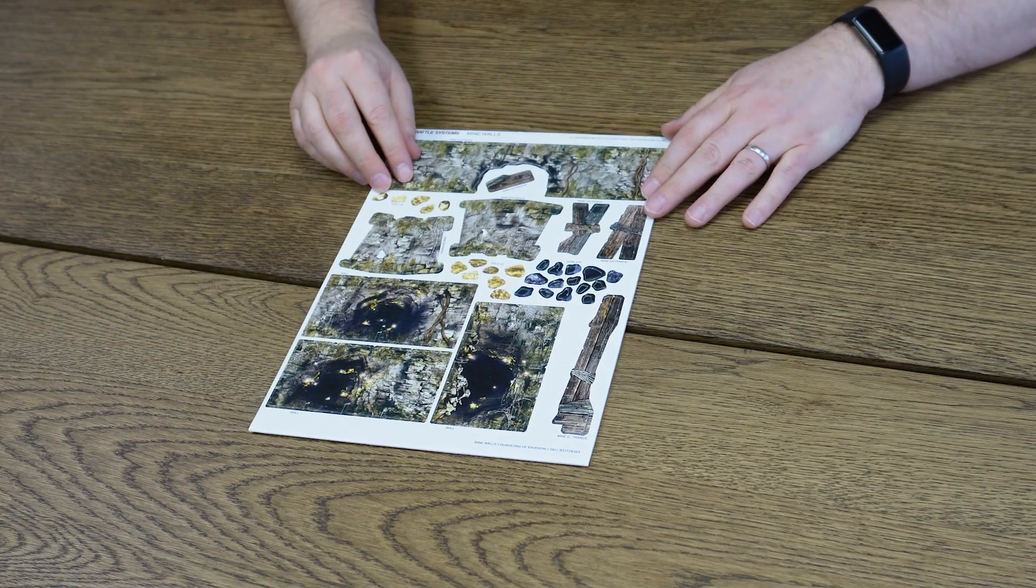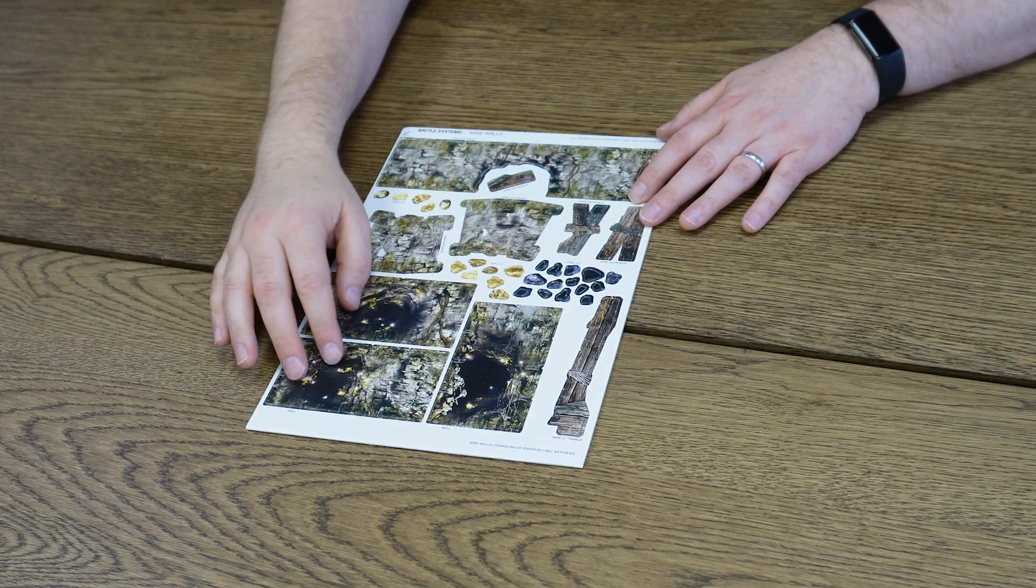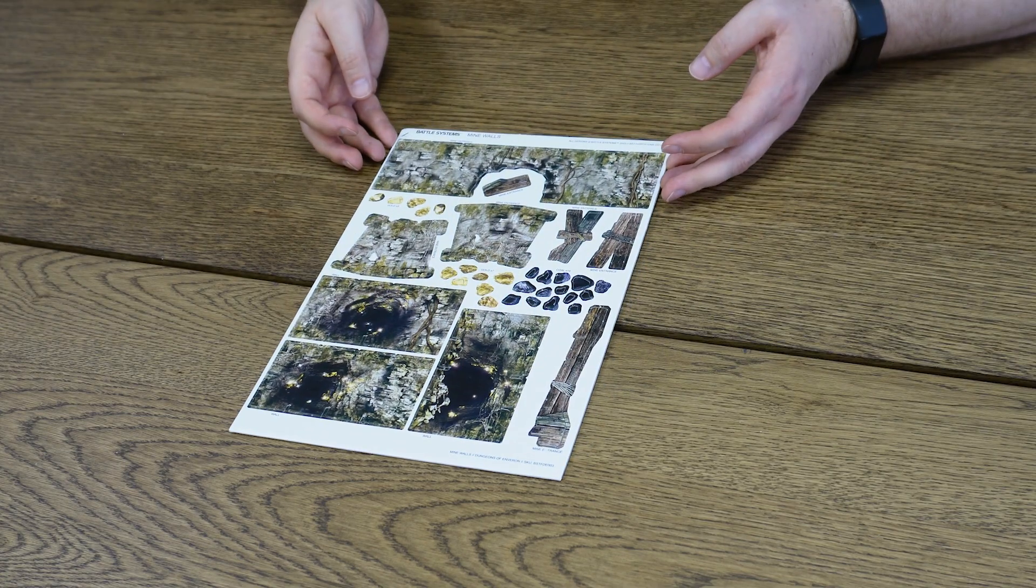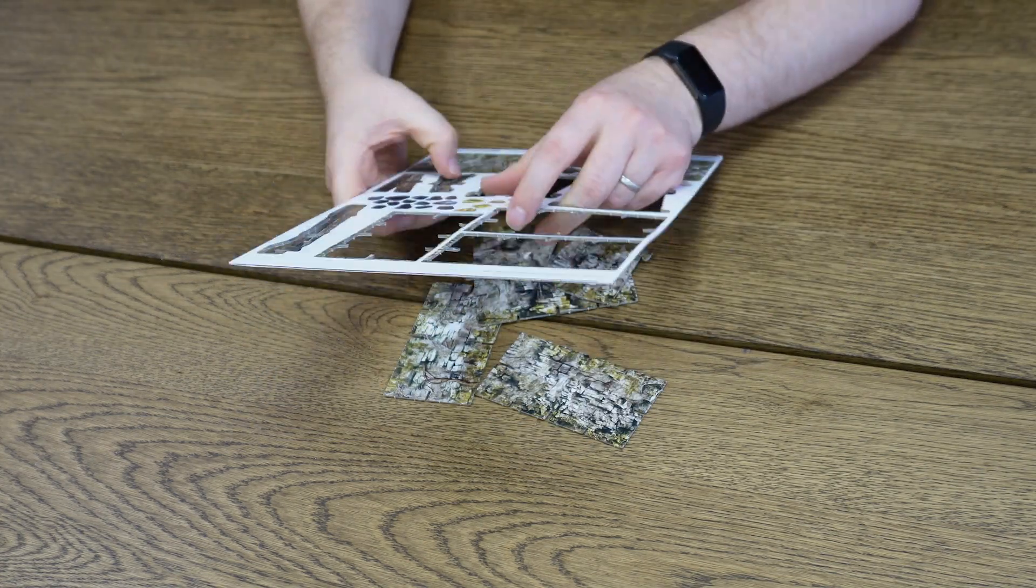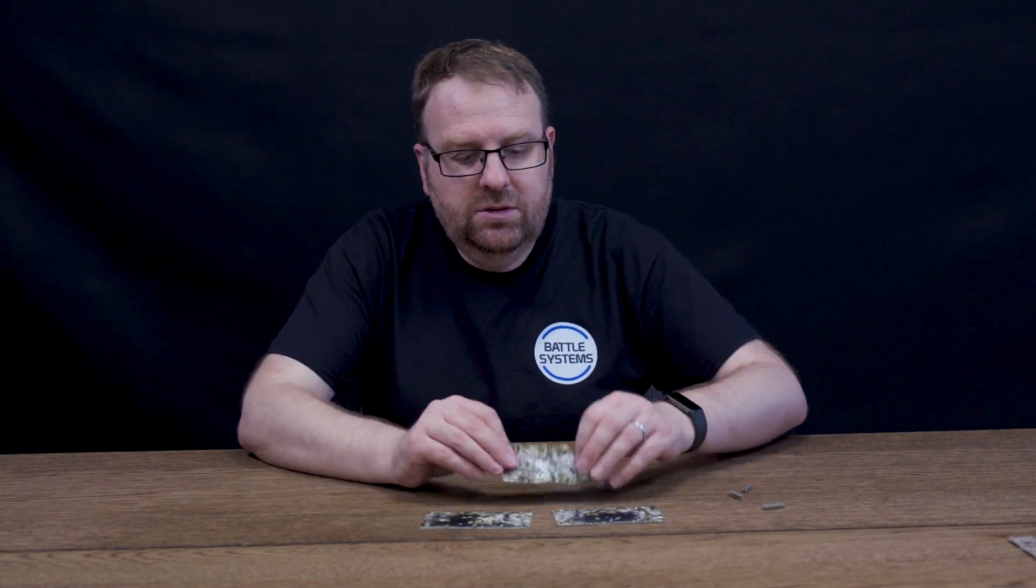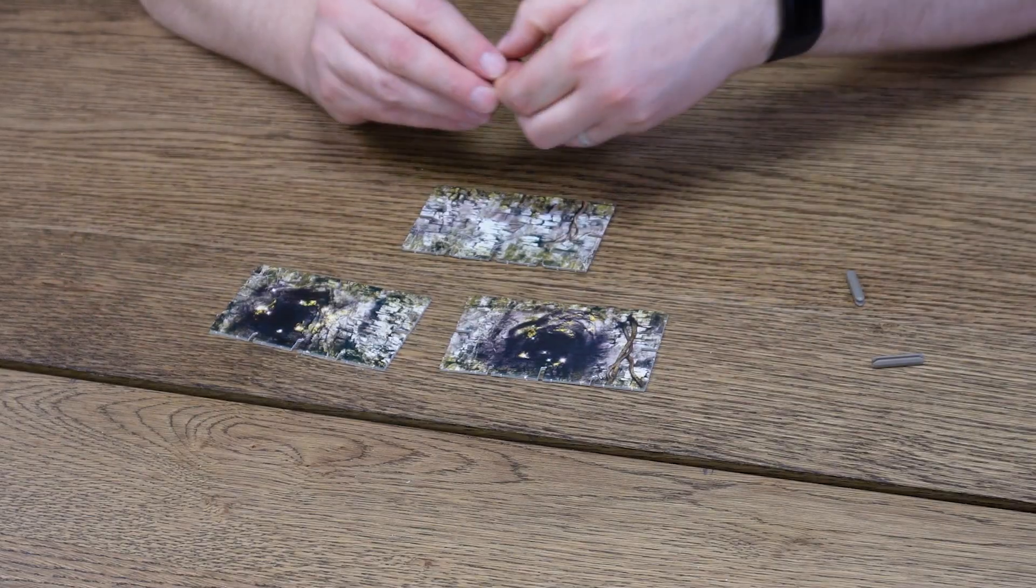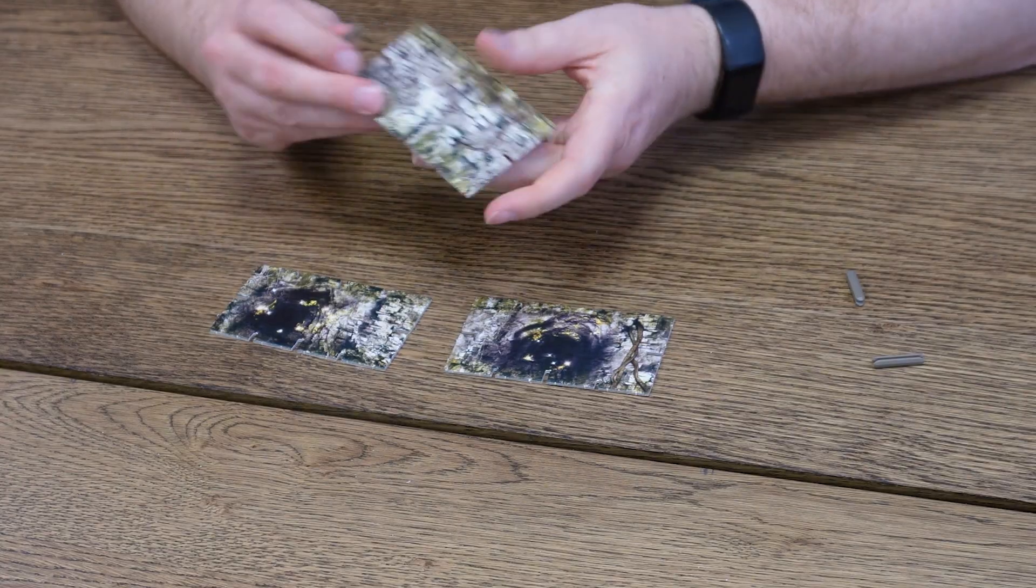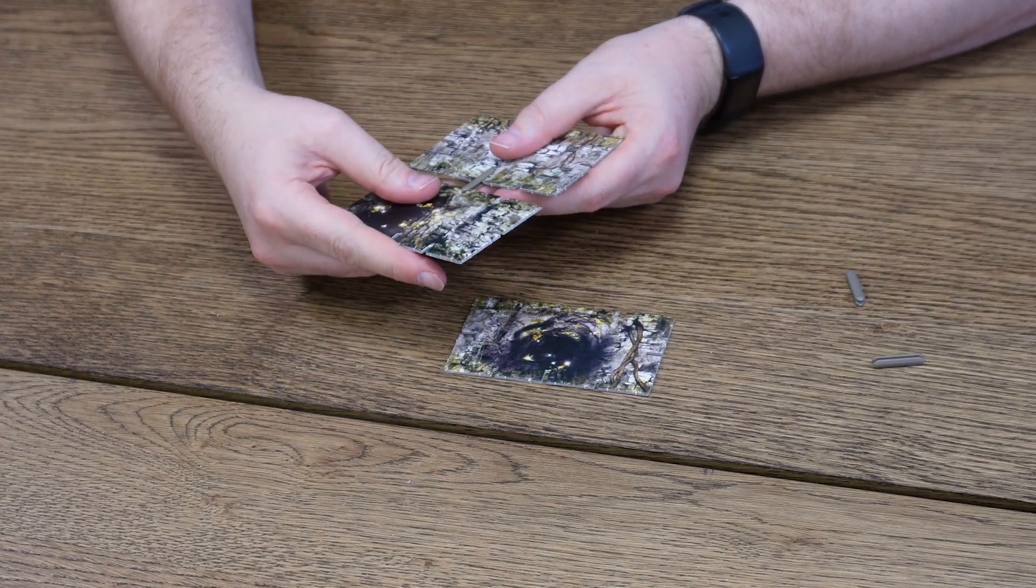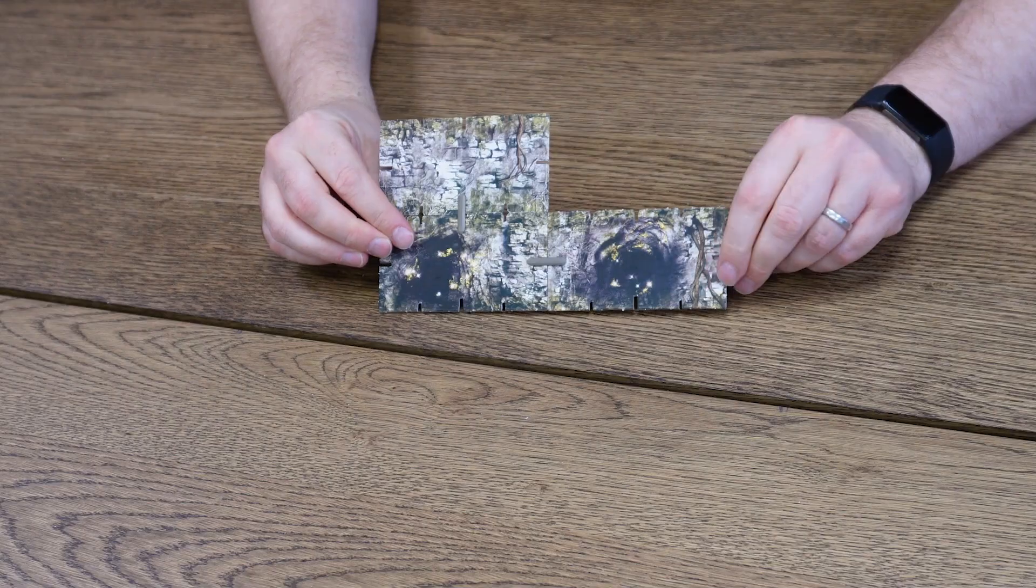The last sheet in this set is the mine walls. And in here we've got a mine entrance, we've got these pillars that go on the side, and we've got these seams of ore. The seams of ore are quite self-explanatory. You use them like any other wall piece. You just find a nice rocky looking textured part of the wall and you just slot them in as part of your wider build. And they just build into it as any other wall would.